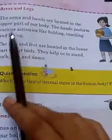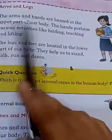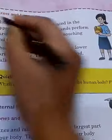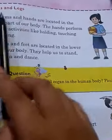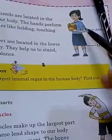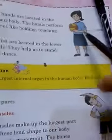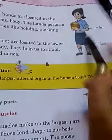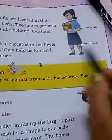Good morning, Class 3. Our next topic is arms and legs, which are also external body parts. Look at the picture here — one girl is shown, and it is written here 'arms and legs.' In your page, it is also written.